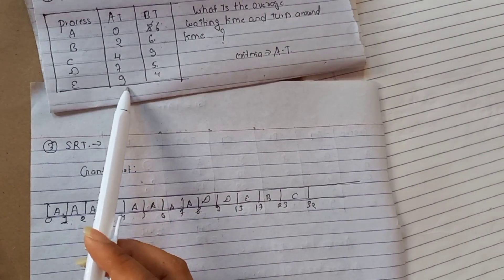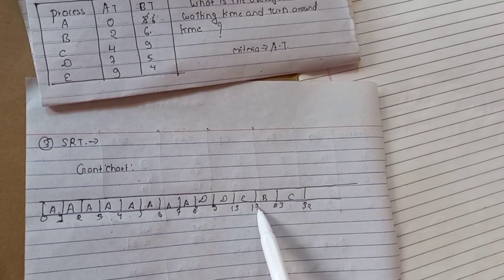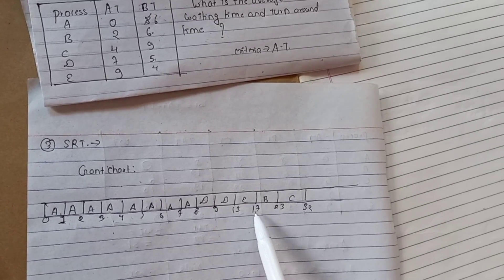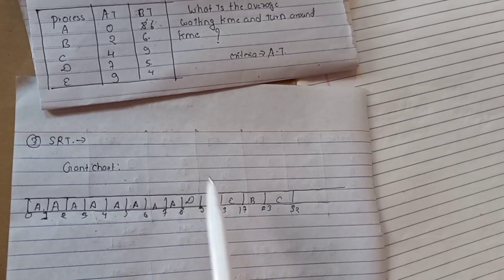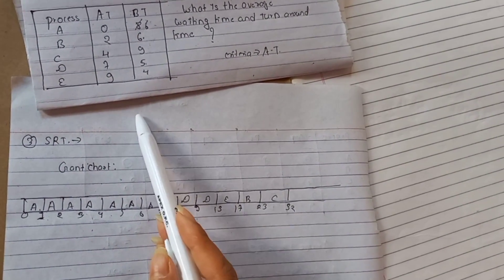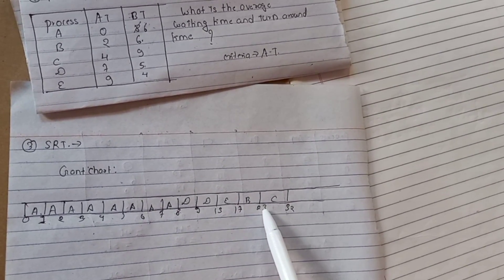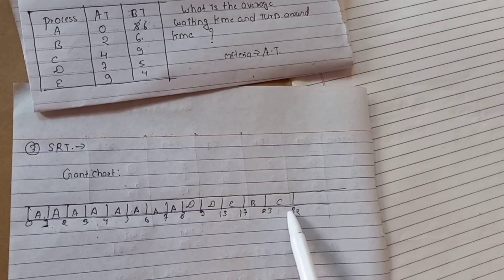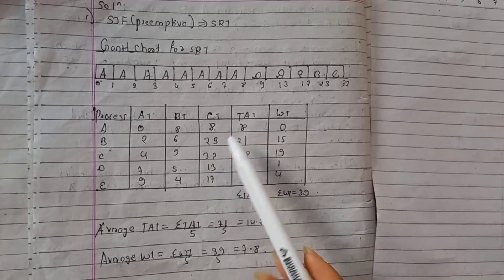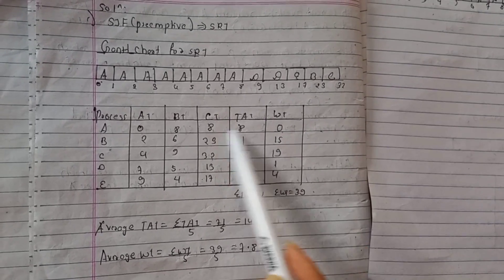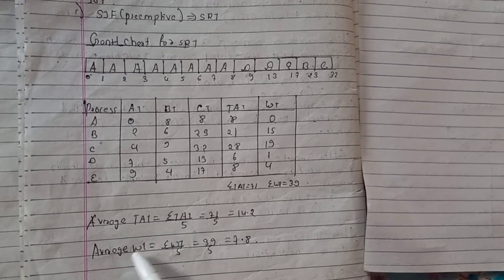For SRT scheduling, looking at burst times for processes C, D, E: process E has the smallest burst time so it comes first. Then D, then B. Completion times: 13 plus 4 equals 17 for E; 17 plus 6 equals 23 for B; 23 plus 9 equals 32 for C. We can then find completion time, turnaround time, and waiting time using the same formula for average turnaround time and average waiting time.